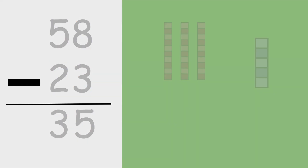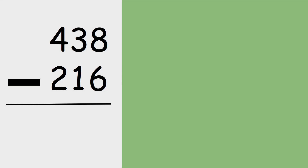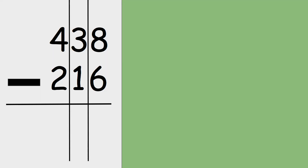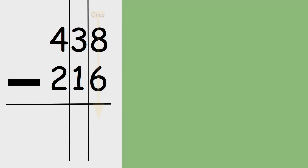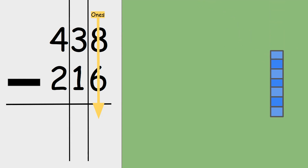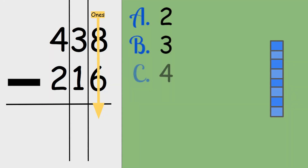438 minus 216. Remember to always start in the ones and work your way to the biggest place value spot. Starting in the ones: eight take away six — is the answer two, three, or four? Eight take away six is two.